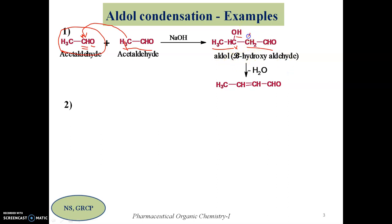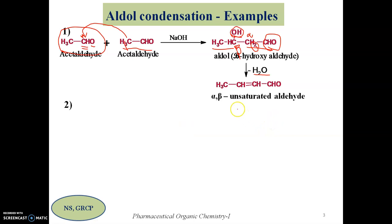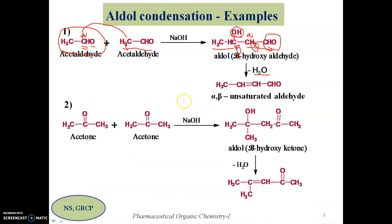The product is a beta hydroxy aldehyde — the carbon adjacent to the functional group is the alpha carbon, and the next is the beta carbon. Upon dehydration, a hydrogen from one carbon and the hydroxyl group from the adjacent carbon are removed as water, and a double bond is introduced, giving the alpha beta unsaturated aldehyde.